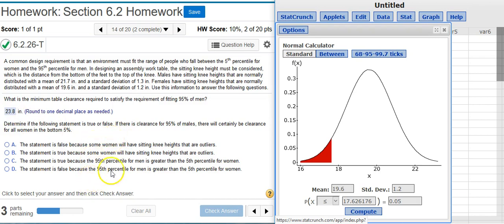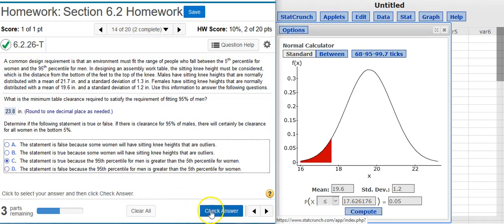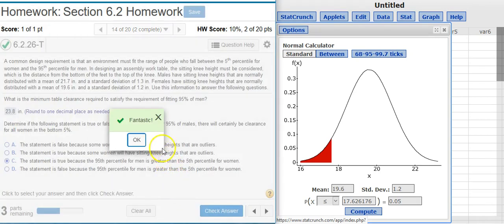So it has nothing to do with the fact that they're outliers. It has to do with the ninety-five percentile for men being greater than the fifth percentile for women. Fantastic.